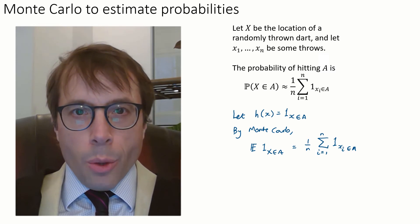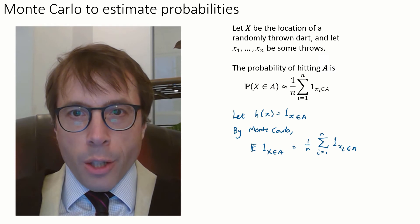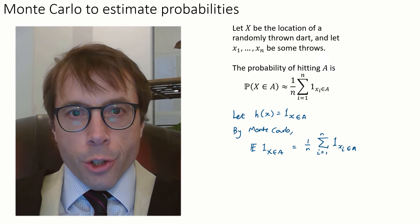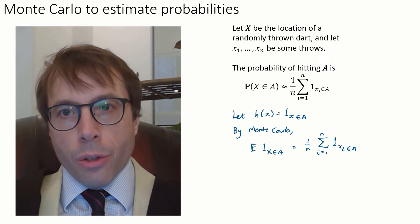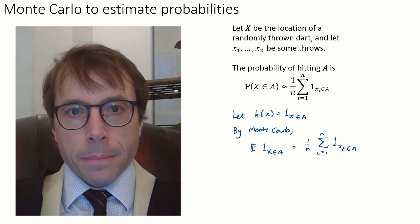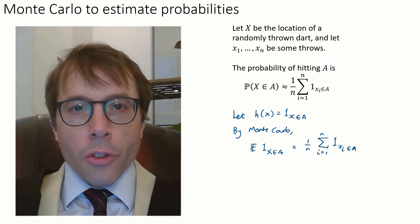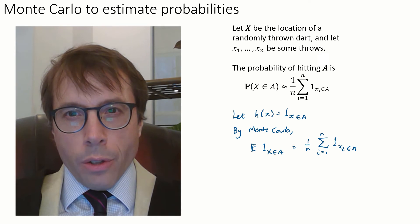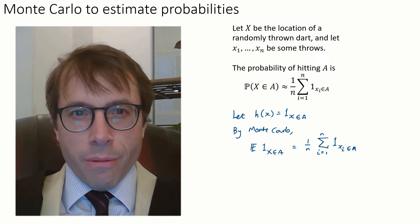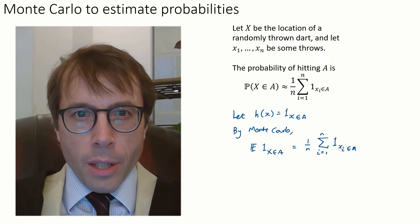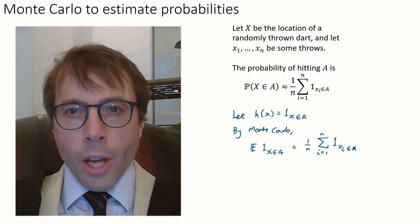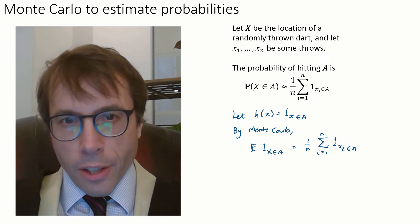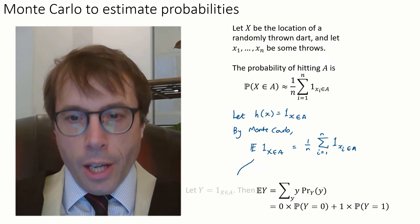The Monte Carlo approximation says that the expected value of h of big X, i.e. the expected value of this indicator function, is roughly the mean of the indicator function applied to all our sample values little x sub i. Okay, so we've got the right hand side of what we wanted, but what does the expectation of an indicator function have to do with probabilities? This actually relies on a very nice little trick with indicator functions. There's a fundamental link between expectations and probabilities via indicator functions.